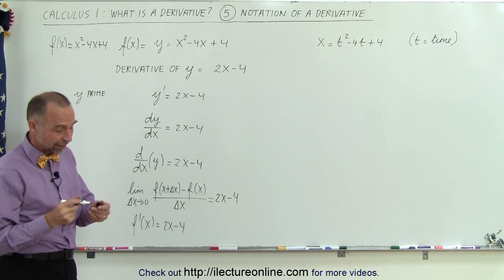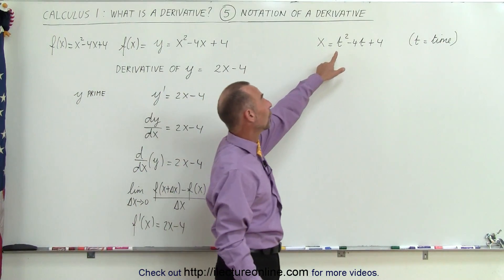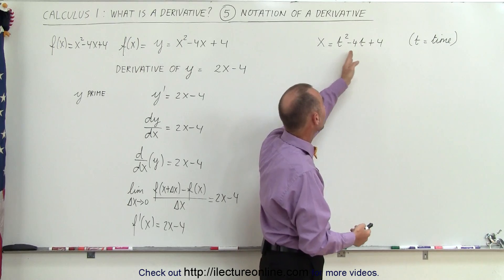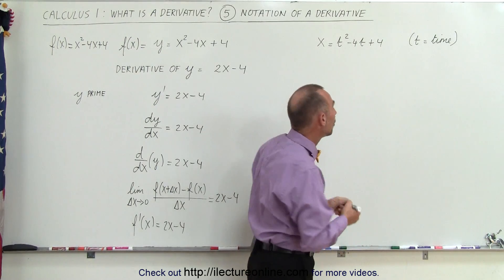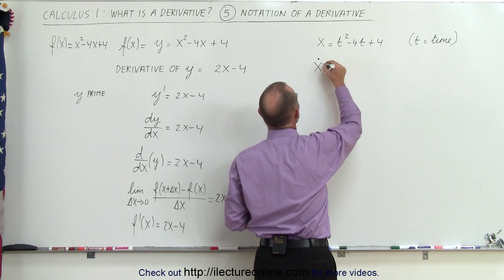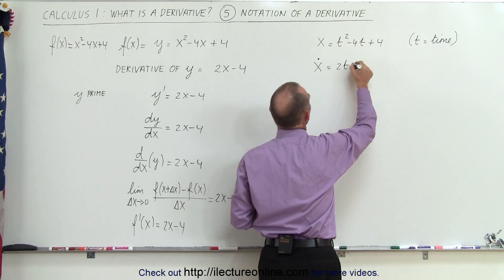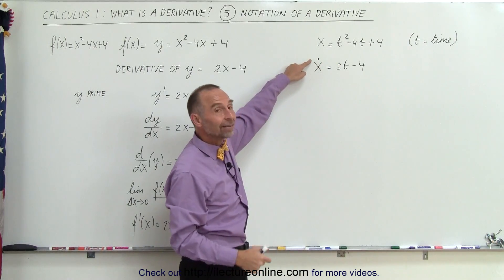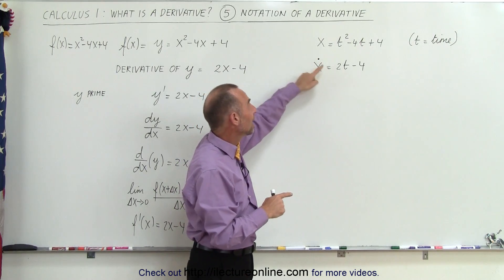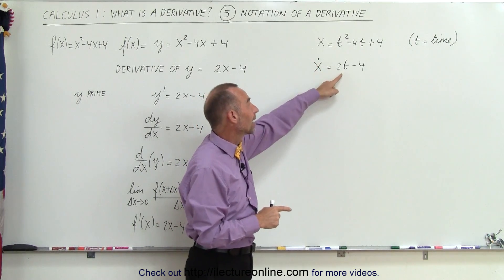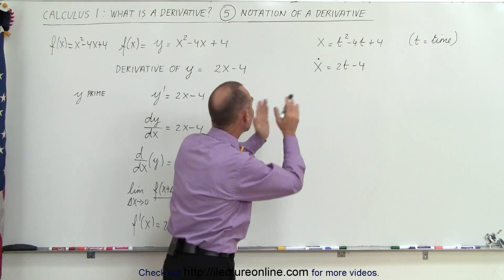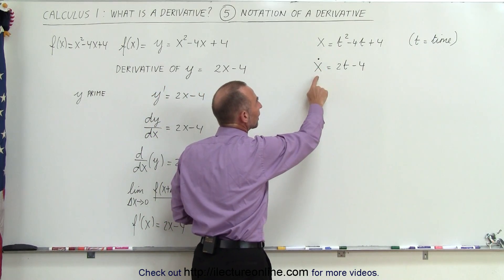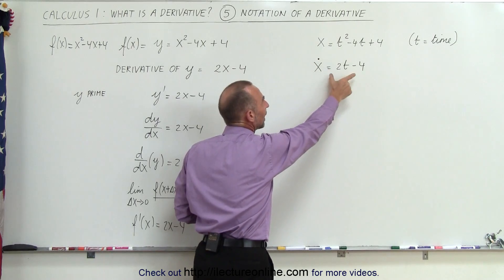There's one more notation. Sometimes the independent variable is t, where t stands for time. Here x could represent position as some function of time. If we want to find the derivative, we write x with a dot over it — so in this case that equals 2t minus 4. Instead of a tick mark, it's a little dot, and that dot means the function is a function of time. This represents the first derivative with respect to time. So the dot notation means the same thing, with the additional information that the derivative is taken with respect to time.